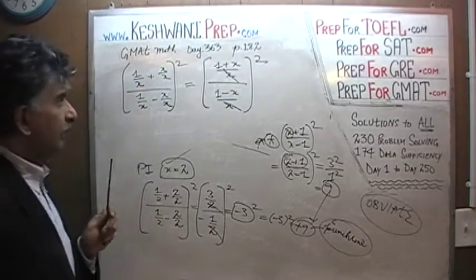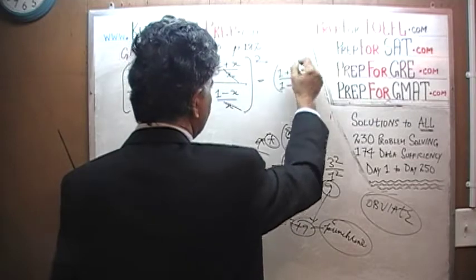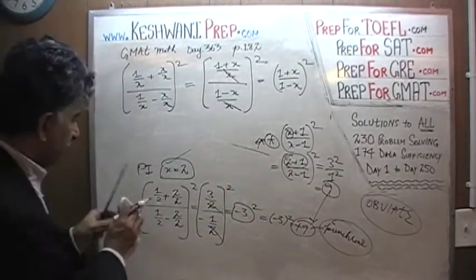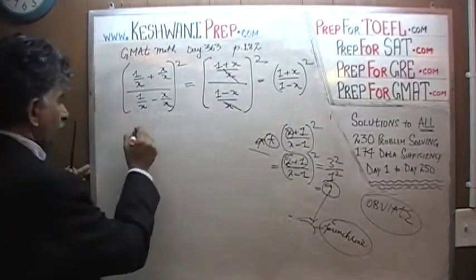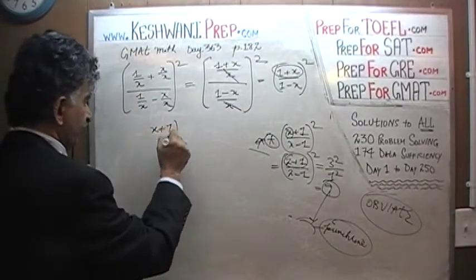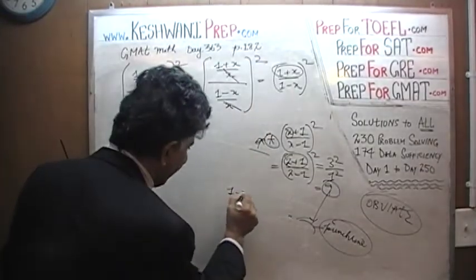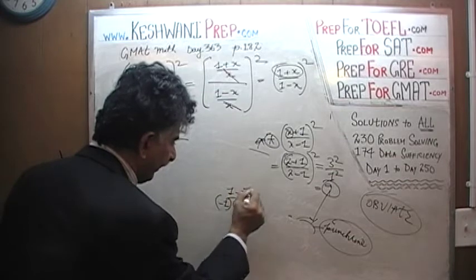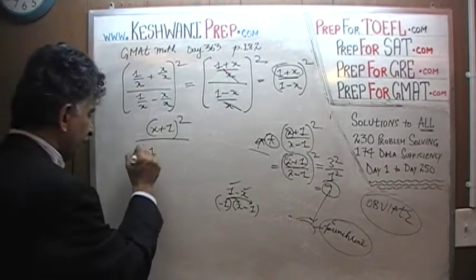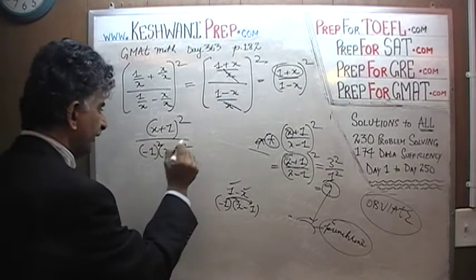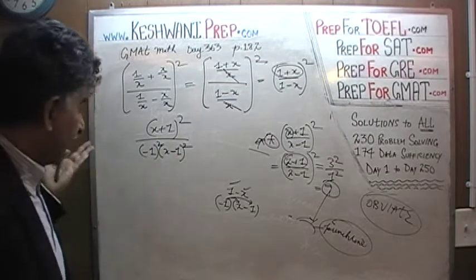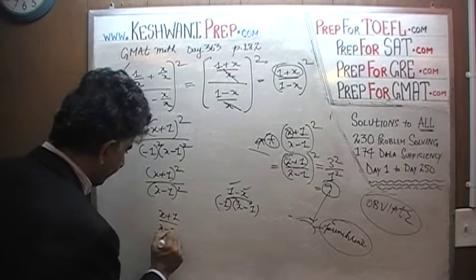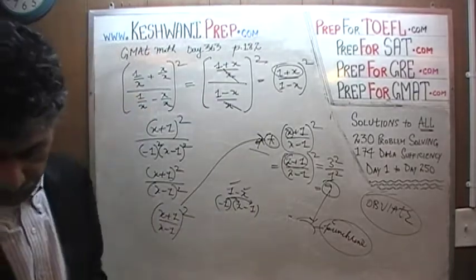Then x cancels out from the bottom, and what we end up with is 1 plus x over 1 minus x, whole squared. Notice the answer A is written in a different form, so we have to make a transition. 1 plus x can be written as x plus 1 — that's the easy part. For 1 minus x, we can take out negative 1 as a common factor, giving us negative 1 times x minus 1. Since this is squared, negative 1 squared is positive 1, so it becomes x plus 1 over x minus 1, all squared — which is what we have for answer A. But none of that was necessary.